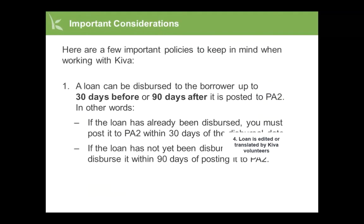Here are a few important policies to keep in mind when working with Kiva. A loan can be dispersed to the borrower up to 30 days before or 90 days after it is posted to PA2. In other words, if the loan has already been dispersed, you must post it to PA2 within 30 days of the dispersal date. If the loan has not yet been dispersed, you must disperse it within 90 days of posting it to PA2.